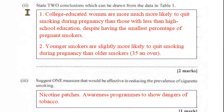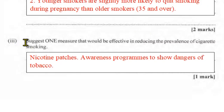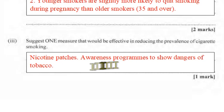Two conclusions from the data: first, college-educated women — those with bachelor's degrees — are much more likely to quit smoking during pregnancy than those with less than a high school education, despite having the smallest percentage of pregnant smokers. Second, younger smokers are slightly more likely to quit smoking during pregnancy than older smokers, possibly because they are less addicted to nicotine. One measure to reduce prevalence of cigarette smoking: nicotine patches help reduce addiction or dependency, and awareness programs showing the dangers of tobacco — such as ads on YouTube and television.